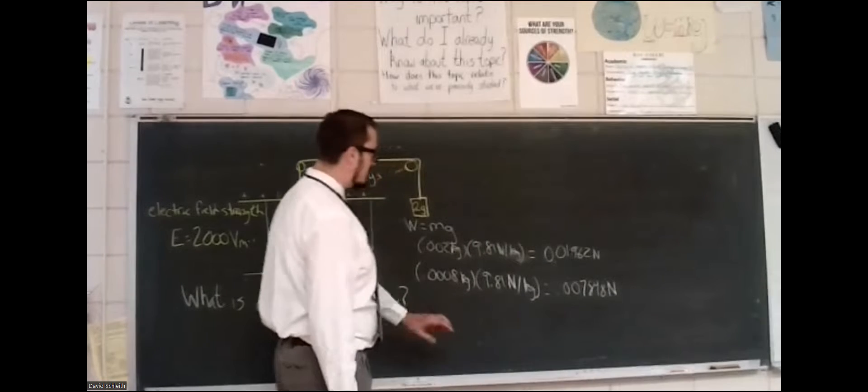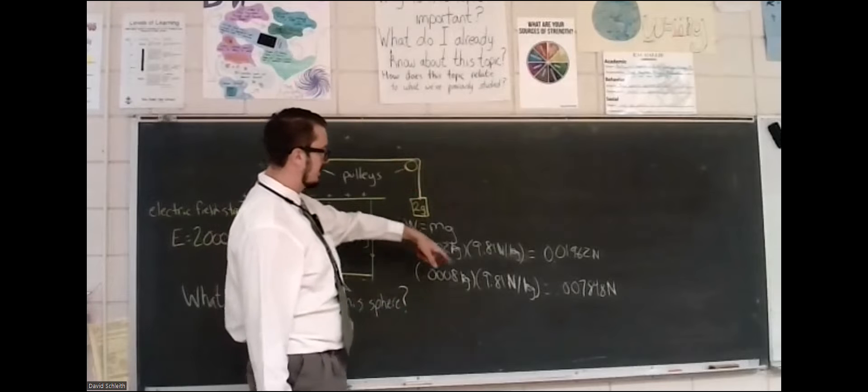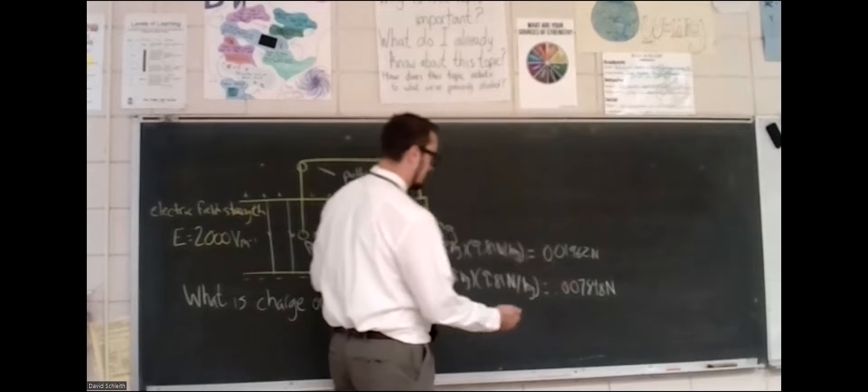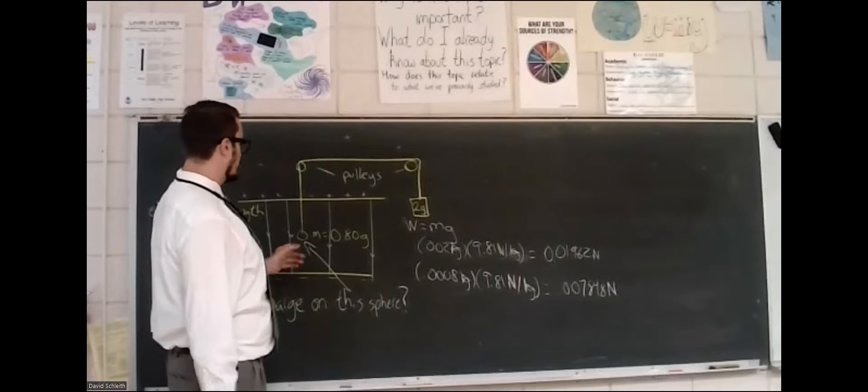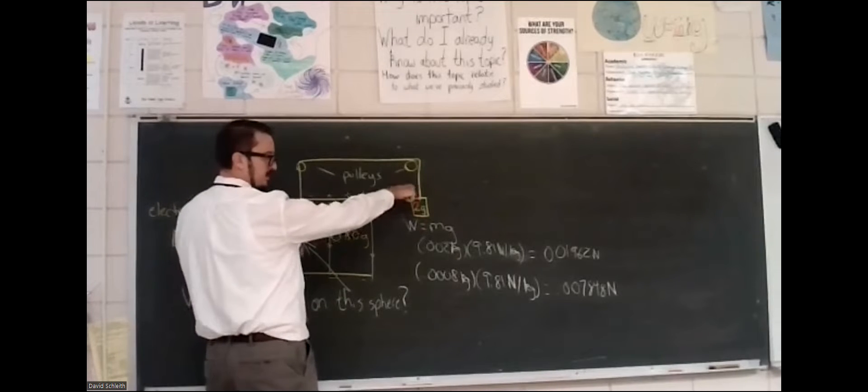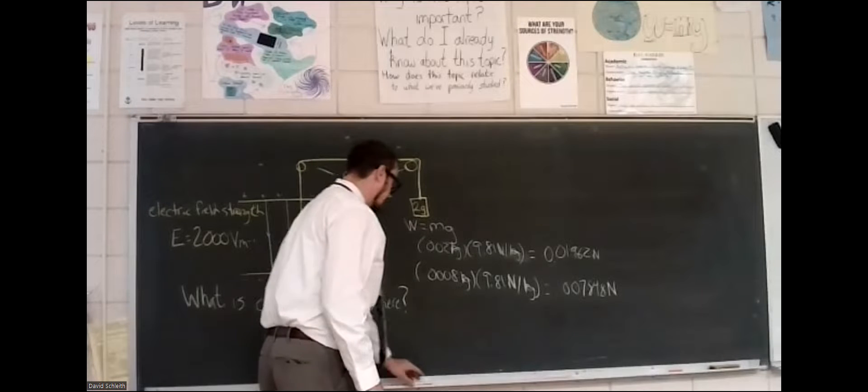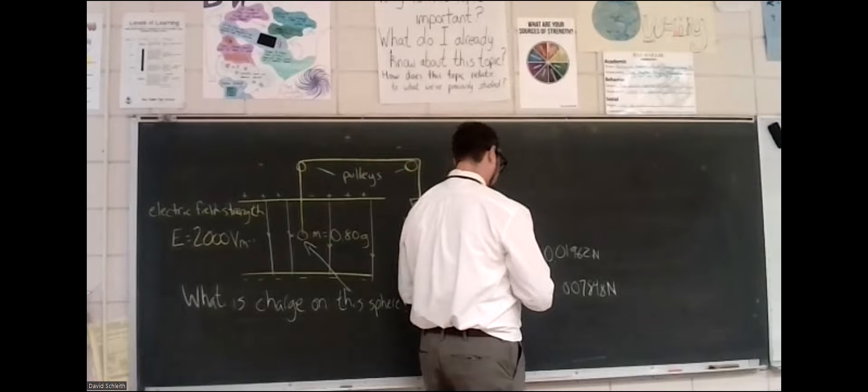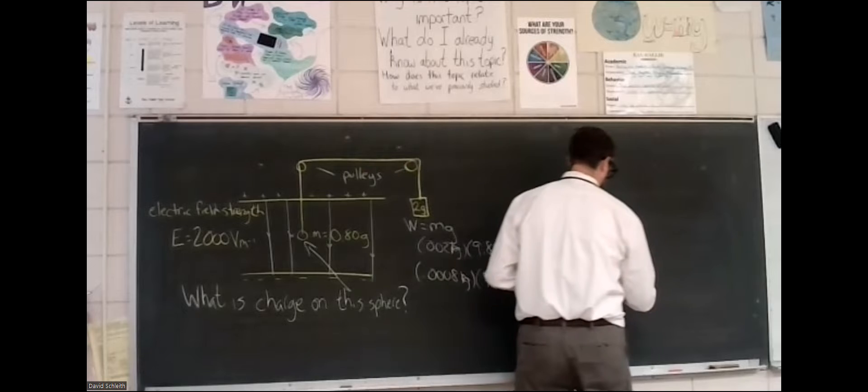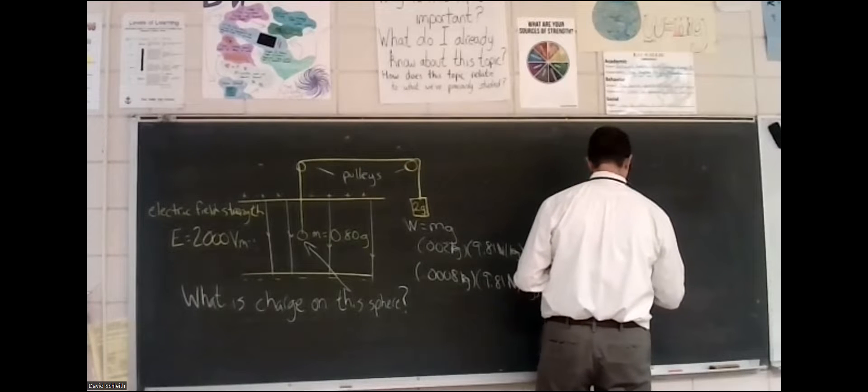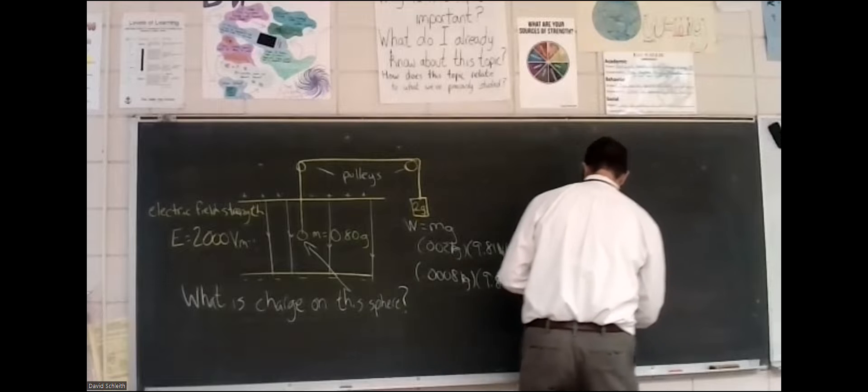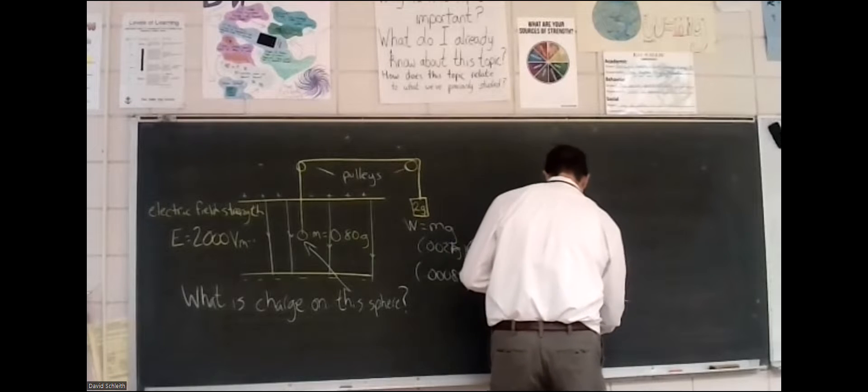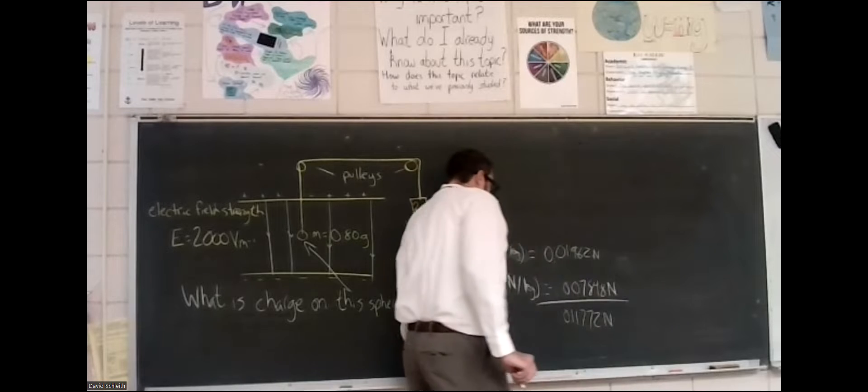So there is a net force there acting in this direction. And we can take the difference between those two to see what the net force is. That's just the difference in the weights here. If you have two masses suspended from pulleys, it's like who's going to win that tug of war? The one with more weight, obviously. So 0.01962 minus 0.007848. The difference in force is going to be 0.011772 newtons.